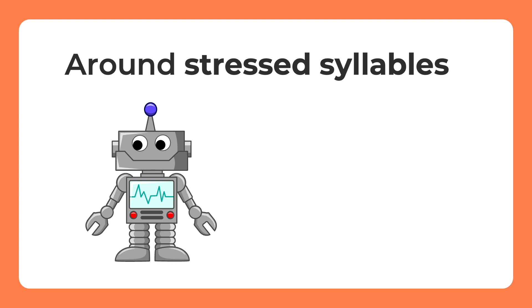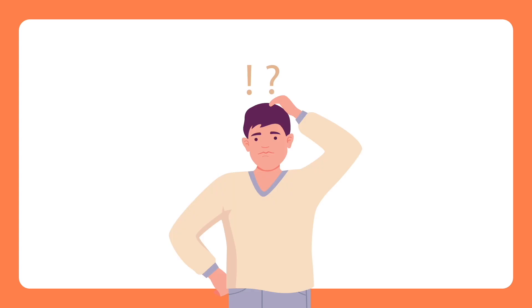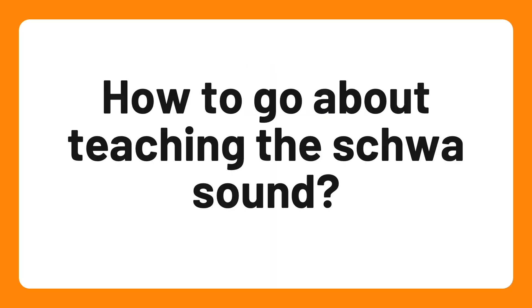Sometimes, in informal conversations, we even reduce to a simple 'uh' sound the vowels in words like 'to' or 'you'. Think of 'I gave it to you' versus 'I gave it to you'. When confronted with a very neutral sound and you can't pinpoint what it is, you might be dealing with the schwa sound.